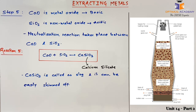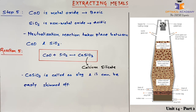Hence we cannot make 100% use of pig iron — some of it is used in making canisters, etc. But most of the iron obtained from the blast furnace goes into making steel. We will be discussing the basic oxygen converter, a device used to make steel from iron.